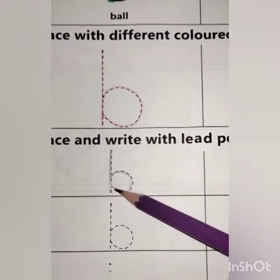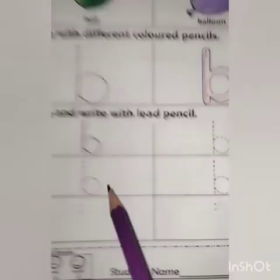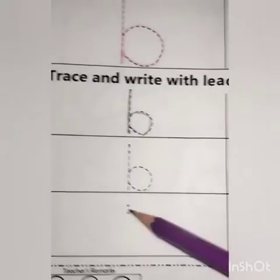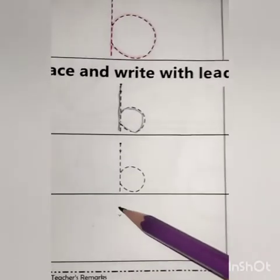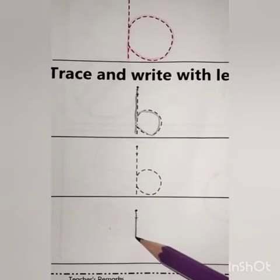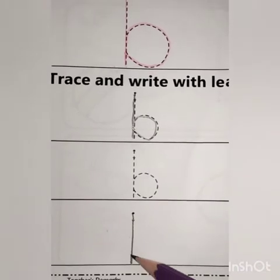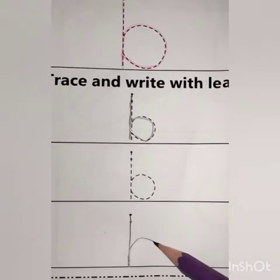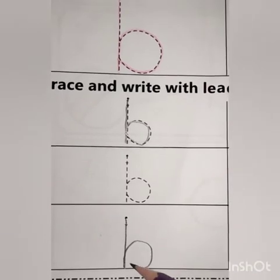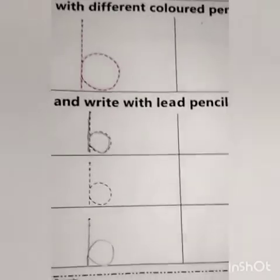Like this. Students, you have to trace four times here. And after tracing, you have to do independent writing. Start from the arrow, come downwards, go upward and make a semicircle like a balloon type shape.